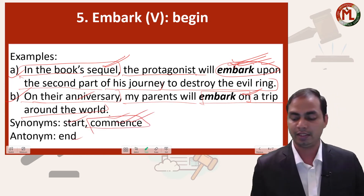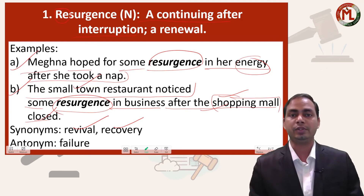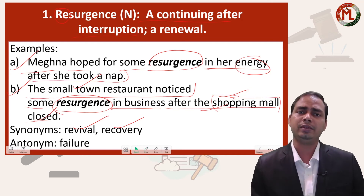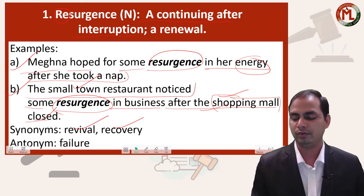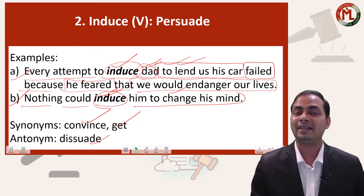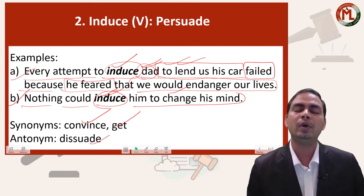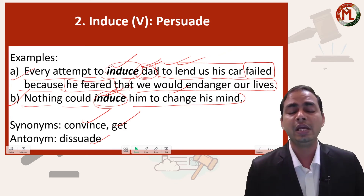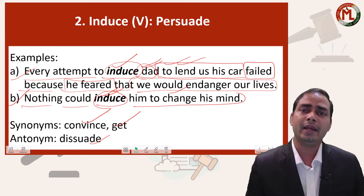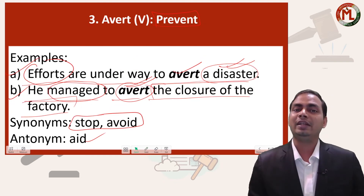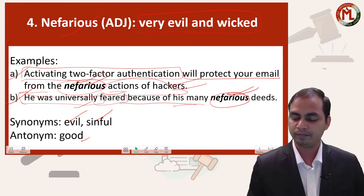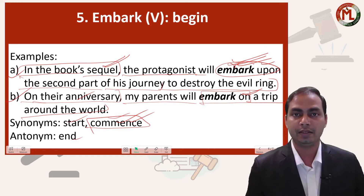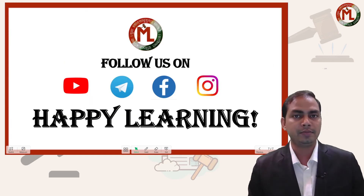I hope you understood all the terms. Let us recall what words we discussed today. The first word was resurgence — it means kisi cheez ki phirse suruaat karna because of some hindrance. The second word was induce — like dark is inducing to sleep; darkness convinces you to sleep. Third word was avert — it means prevent, rokna. Nefarious means koi bura kaam karne wala bura vyakti. And embark means to begin, to set on a journey.